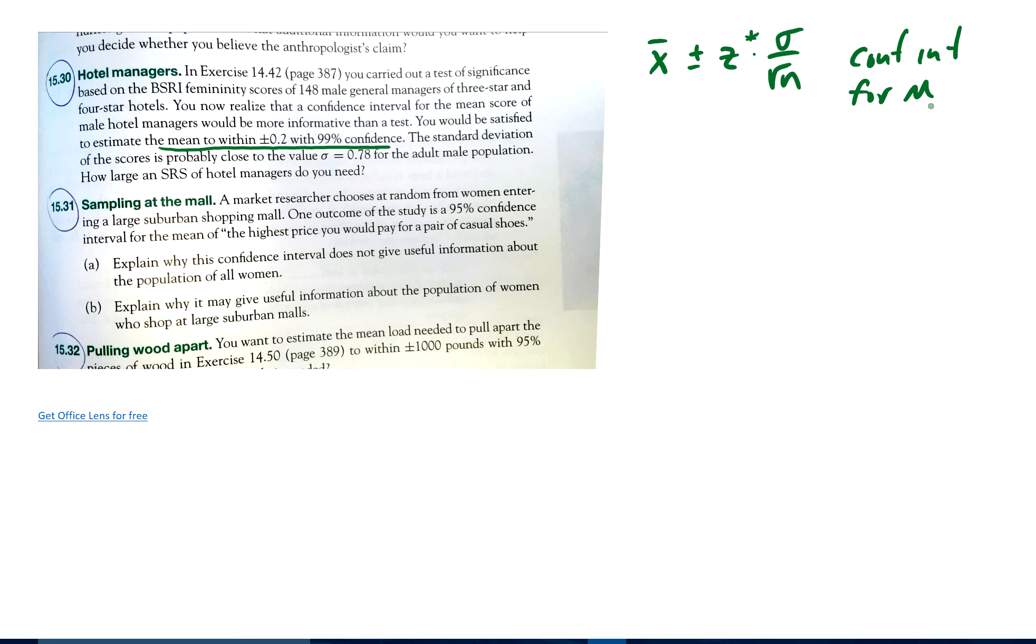That means Z star is 2.576. So that would be X bar plus or minus 2.576 times sigma over square root of N.